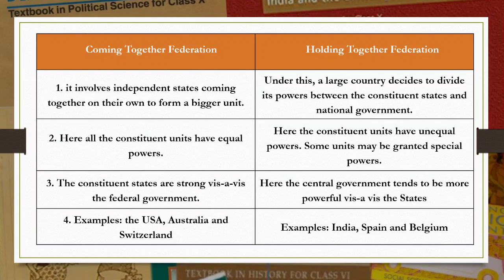In a coming together federation the constituent states are strong vis-à-vis the federal government. In a holding together federation the central government tends to be more powerful vis-à-vis the states. Examples of coming together federations are the USA, Australia, and Switzerland. Examples of holding together federations are India, Spain, and Belgium.